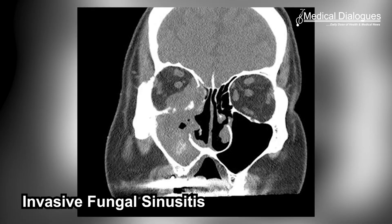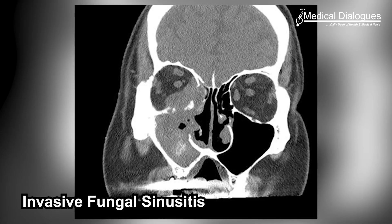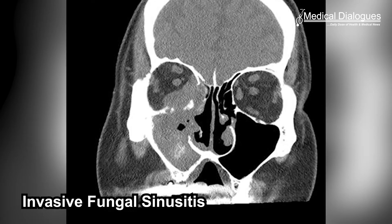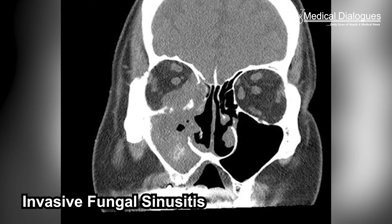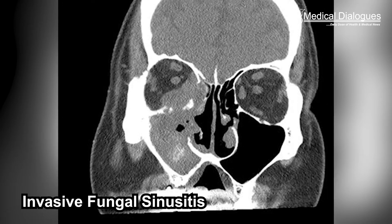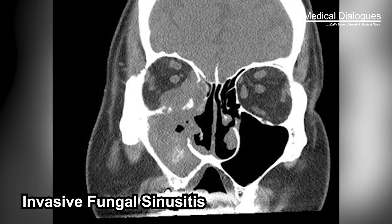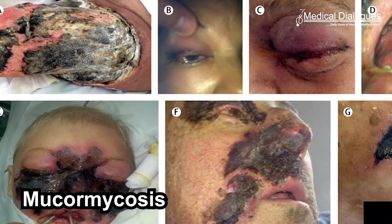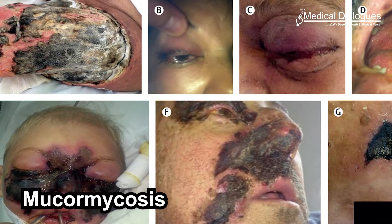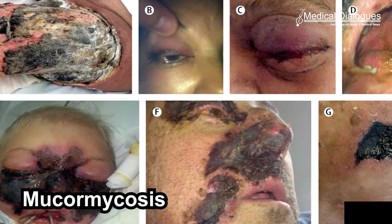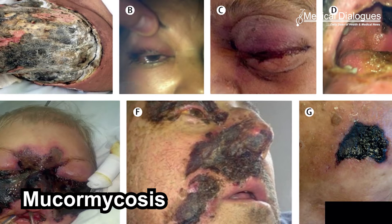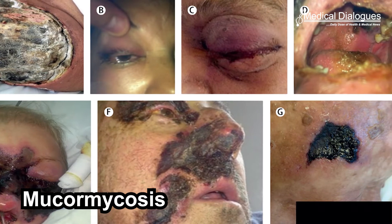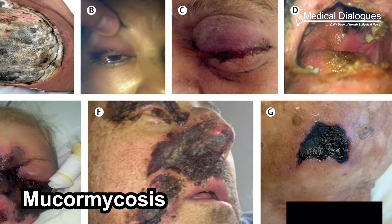Invasive fungal sinusitis — for example, conditions like mucormycosis or aspergillosis — is manifested particularly in immunocompromised patients and specifically those with diabetes. Mucormycosis is highly invasive and relentlessly progressive, resulting in higher rates of morbidity and mortality than many other known infections.